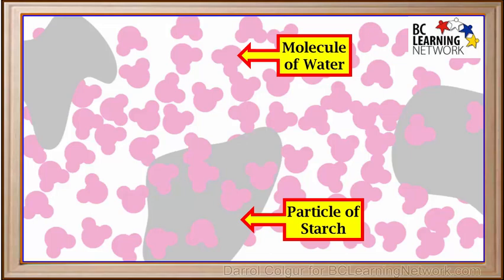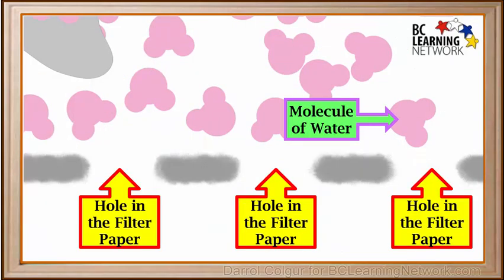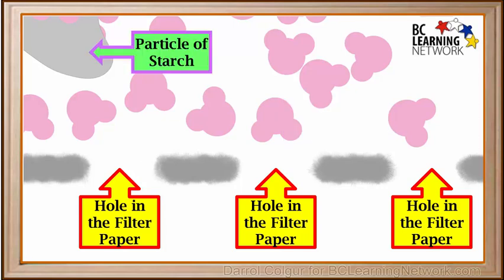When we pretend that we can magnify a heterogeneous mixture of starch and water enough to see the water molecules, the particles of starch shown here are big gray blobs, and they're much larger than the water molecules. Now we'll imagine this mixture is going through a filter paper. We see that the water molecules are small enough to pass through the tiny holes in the filter paper, but the large particles of starch are too big to pass through.